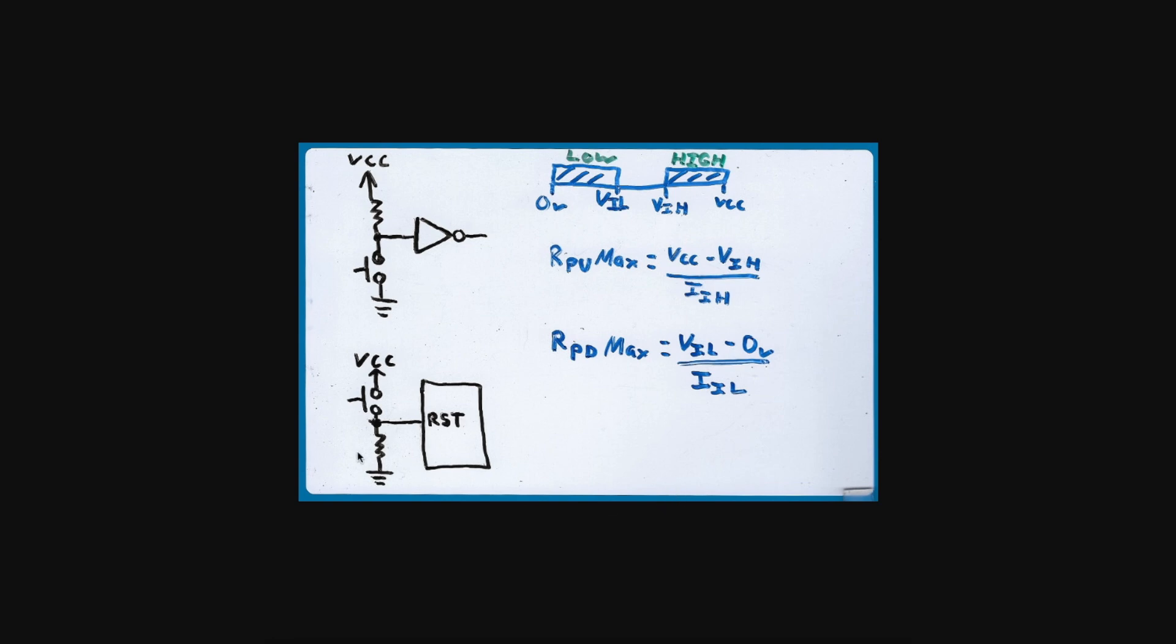So those are some of the considerations when choosing a pull-up or a pull-down with a switch on a digital logic input, reasons why you might need a pull-up versus a pull-down configuration, and how to figure out a minimum and a maximum resistance value to use depending on what your design requirements are.